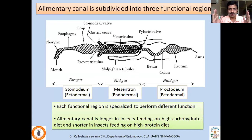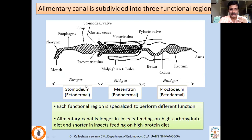The entire digestive system is divided into three functional regions. The first is the foregut, also called the stomodeum, which is ectodermal in origin. The second is the midgut, also called the mesenteron, which is endodermal in origin. The third is the hindgut, also called the proctodeum, which is ectodermal in origin. The alimentary canal is longer in insects feeding on a carbohydrate diet and shorter in those feeding on a protein diet, though there are many exceptions.